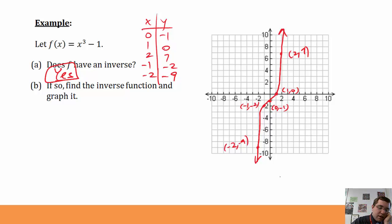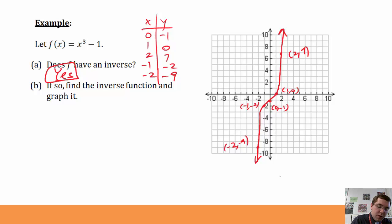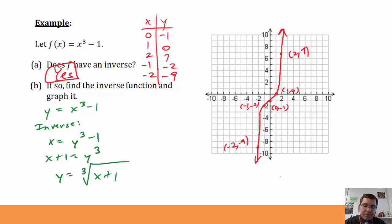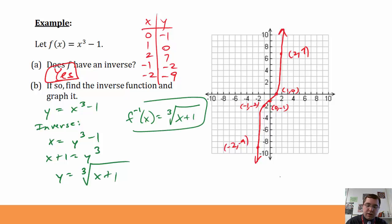How do I find the inverse function? Since the inverse is a reflection over the line y equals x, I get the inverse function by swapping x and y. Originally y equals x cubed minus 1; for the inverse, I switch x and y to get x equals y cubed minus 1, then solve for y: x plus 1 equals y cubed, so y equals the cube root of x plus 1. So my inverse function is f inverse of x equals the cube root of x plus 1.